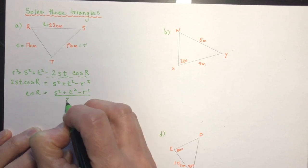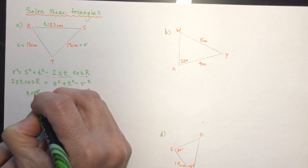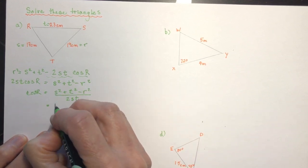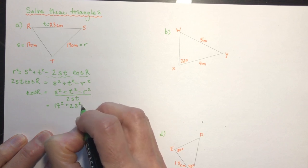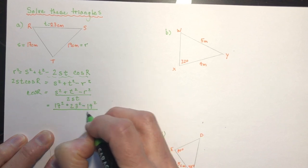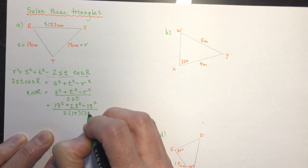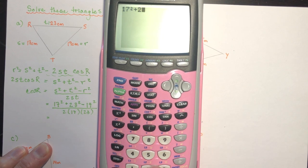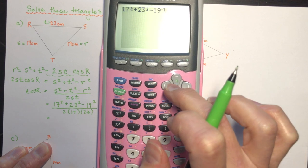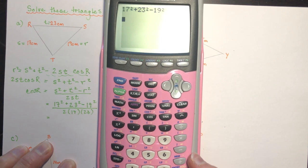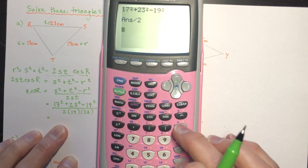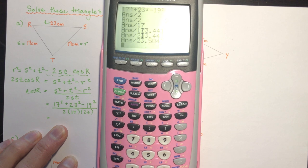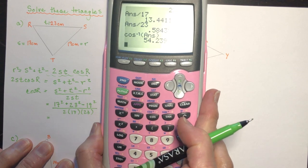Plugging in S equals 17, T equals 23, R equals 19: 17 squared plus 23 squared minus 19 squared equals 457. Divide by 2 times 17 times 23. Taking inverse cosine gives approximately 54 degrees for angle R.